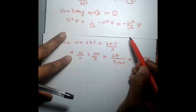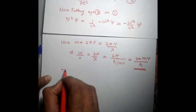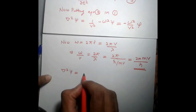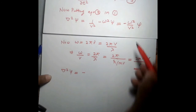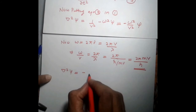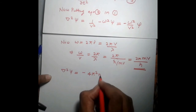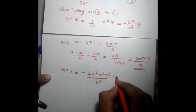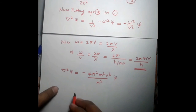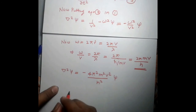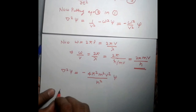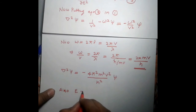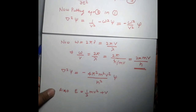Using ω/v = 2πmv/h, substituting into the equation we get: ∇²ψ = −(ω/v)²ψ = −(4π²m²v²/h²)ψ. Also, total energy E equals kinetic energy plus potential energy V.